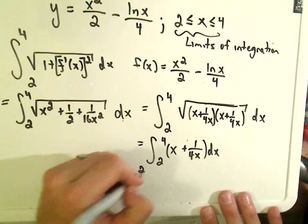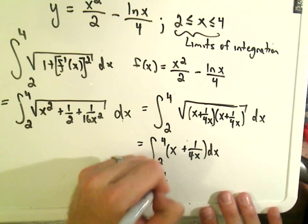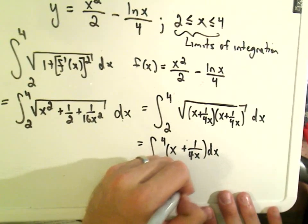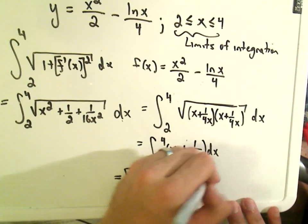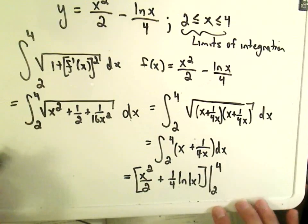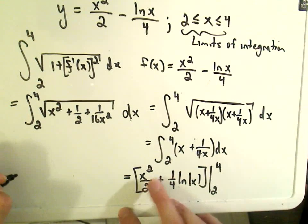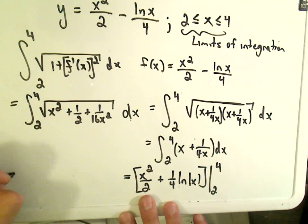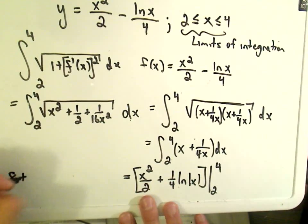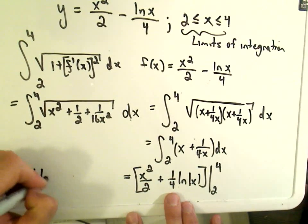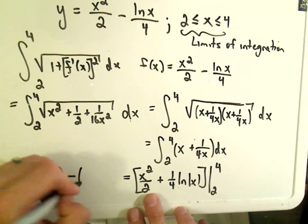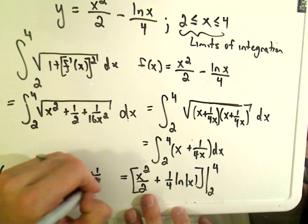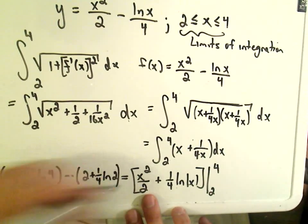You just get x plus 1 over 4x dx. That gives you x squared over 2 plus 1 fourth, the natural logarithm of x. Now all you have to do is plug in your limits of integration from 4 to 2. If we plug 4 in, we get 4 squared which is 16 over 2, or 8, plus 1 fourth, the natural logarithm of 4, minus the lower limit, 2 squared over 2 is going to be 2, plus 1 fourth, the natural logarithm of 2.